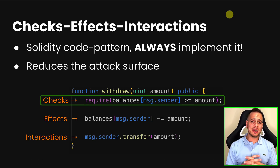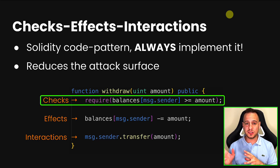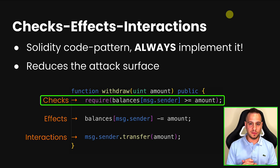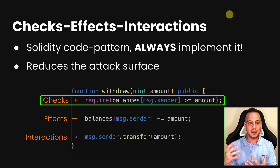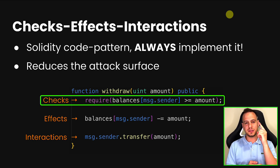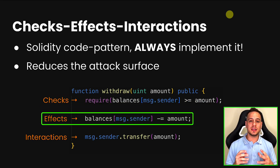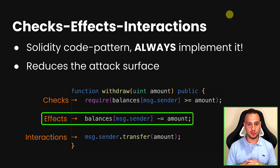The checks phase means you first check all the things that are not dependent on external input. It could be parameters the function receives, message data like msg.sender and msg.value, or the contract state. You validate things — this is called the checks phase and is step one. Then once you've done the checks, you do the effects. Effects means you make a change to the state of the contract.